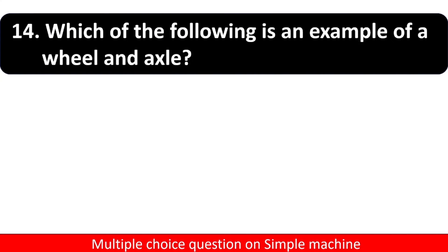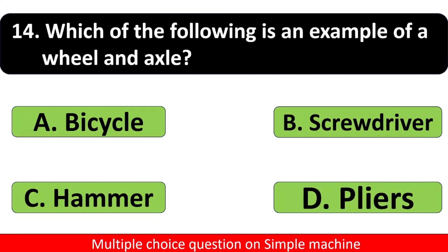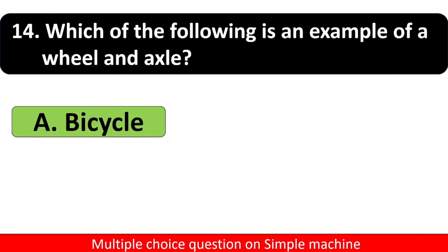Which of the following is an example of a wheel and axle? Options are: screwdriver, bicycle, hammer, or pliers. Your time starts now. And the correct answer is bicycle.